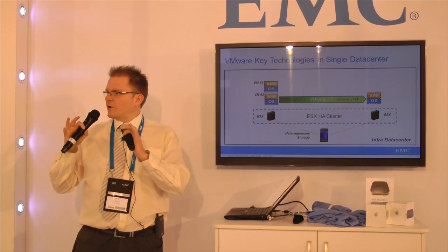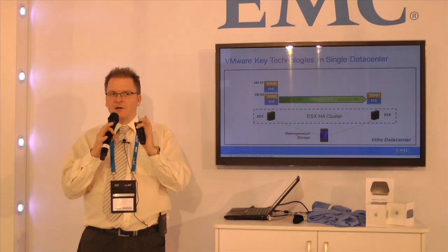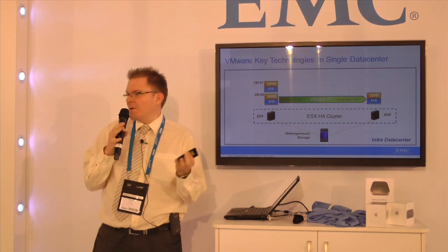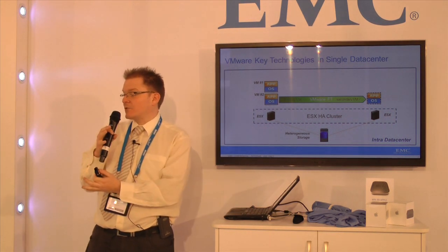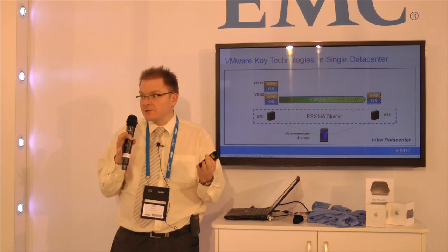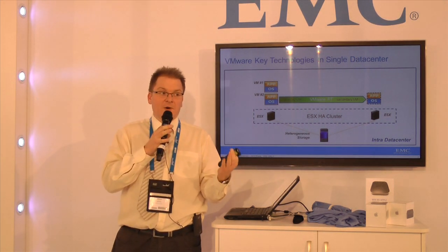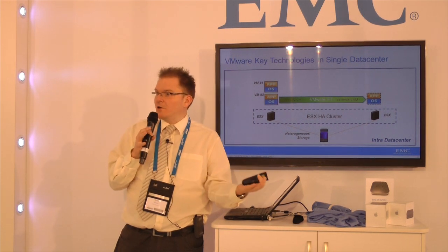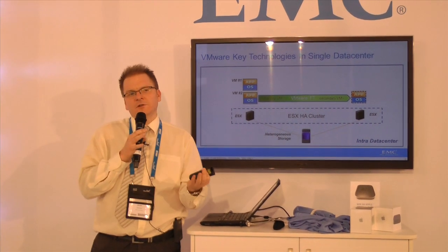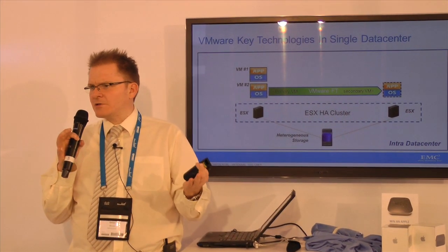We'll start off by looking at four main VMware features. vMotion — everyone knows vMotion — where we can vMotion a VM from one ESX server to another. DRS, which allows us to load balance over ESX servers. HA, where if we lose a physical server we get automatic VM restart. And fault tolerance, where if we lose a physical server there is no restart and there's no downtime.